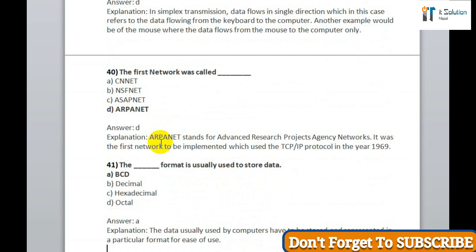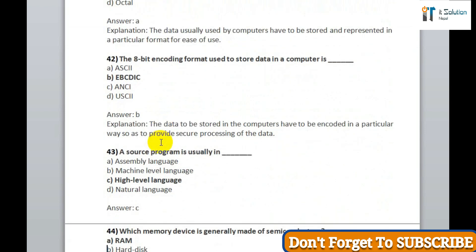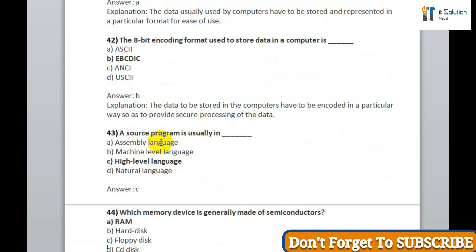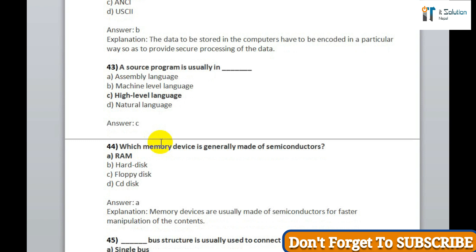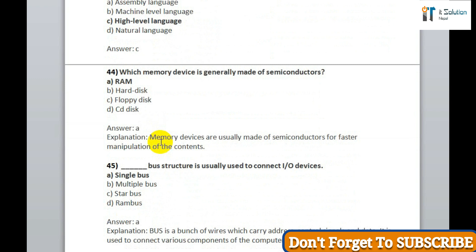Question 41: the BCD format is usually used to store data — correct answer is BCD. Question 42: the 8-bit encoding format used to store data in a computer is correct answer option B, EBCDIC. Question 43: a source program is usually in option C, high-level language. Question 44: which memory device is generally made of semiconductors? Correct answer is RAM. Question 45: the single bus structure is usually used to connect I/O devices — correct answer is option A, single bus.